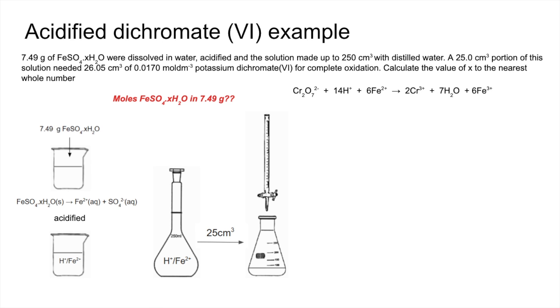So in terms of what do we need to calculate—well, we need to know the moles of FeSO4·XH2O in the 7.49 grams so we can work out the MR, and then once we know that, we can subtract away what we do know about the formula and we're left with the mass of the X waters. So a very similar calculation to before at the start.